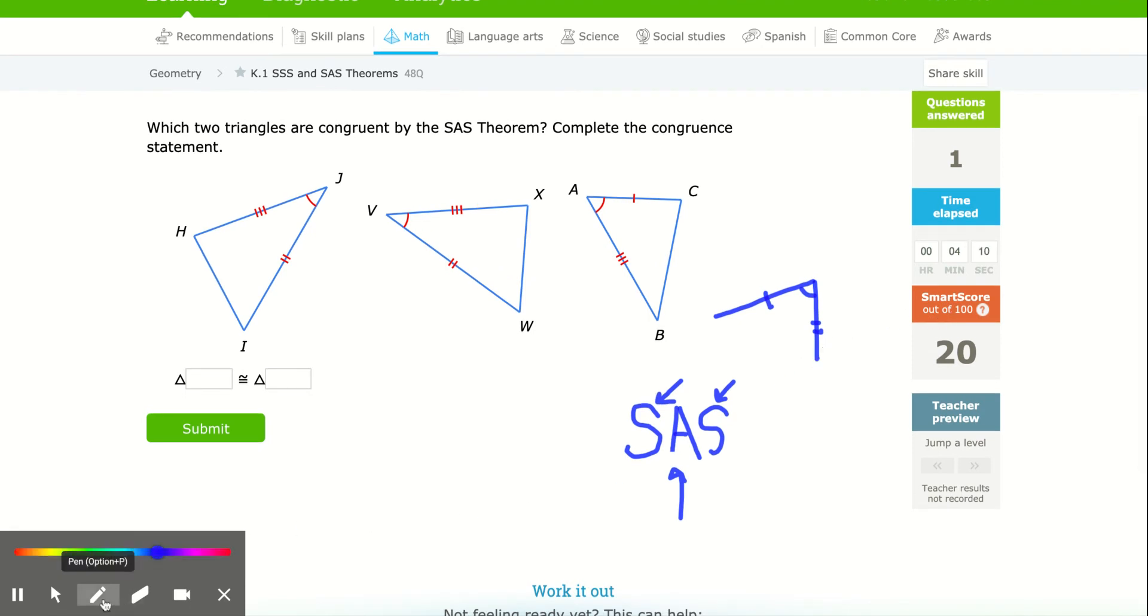It won't be one of the other angles on the outside. So it wouldn't be this angle here, or this angle here. That wouldn't make sense, because it's, or that wouldn't be true, because it's not the angle in between or formed by the two sides.